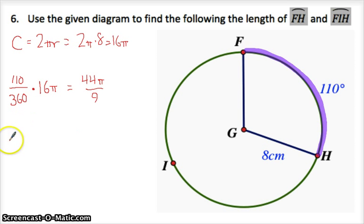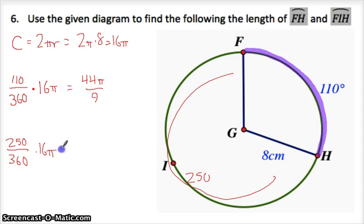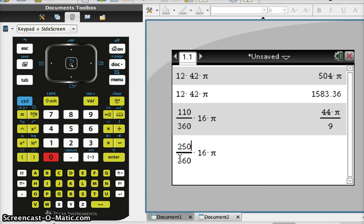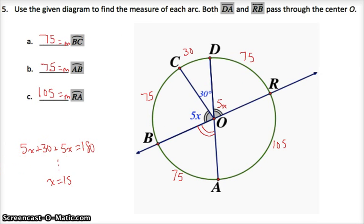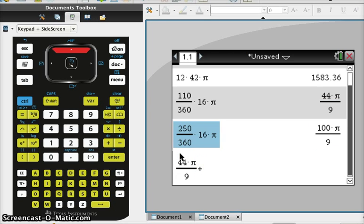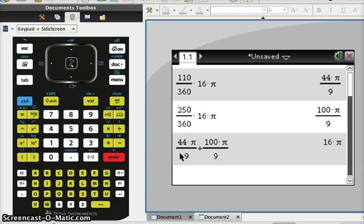The rest of the thing. It's the rest of the circle. This is 250 degrees out here. So 250 360ths of 16π. I get 100π over 9. If I'm really not sure if this adds up to 16π, watch this. 44π over 9 plus 100π over 9 is 16π. Lovely. I will talk at you more in class about all this circle stuff. Thanks for watching.